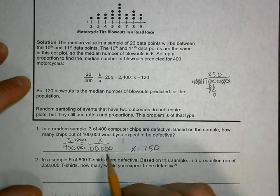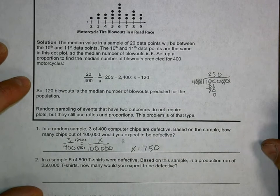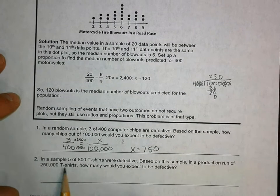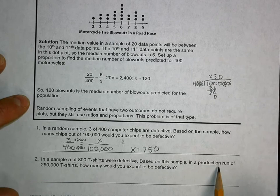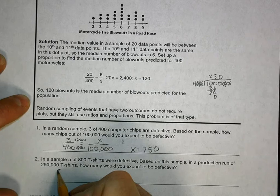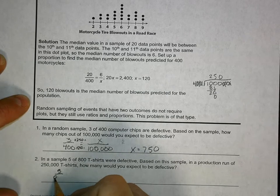In a sample, 5 of 800 t-shirts were defective. Based on this, in a production run of 250,000 t-shirts, how many would you expect to be defective? I make my ratio.